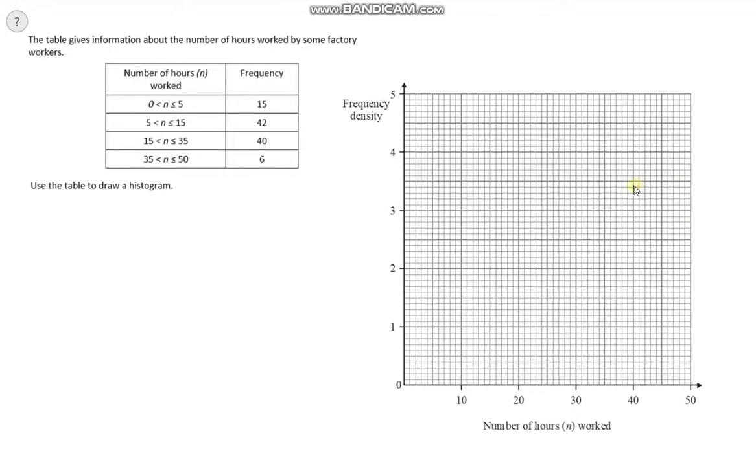The table gives information about the number of hours worked by some factory workers. 0 to 5 hours, there were 15 people who worked that, and so on. Use the table to draw a histogram. Again, we need to calculate the frequency density first because that's our y-axis. Let's calculate the frequency density. I haven't got much space here, so I'll do it down here. The first one, our frequency is 15, and we're dividing by our class interval of 5. 15 divided by 5 gives us 3.